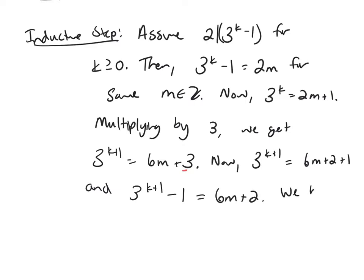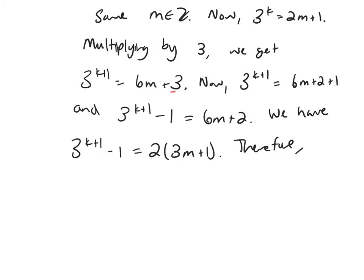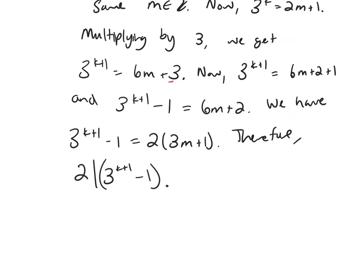So we have that 3 to the k plus 1 minus 1 equals 2 times (3m plus 1). Therefore, 2 divides 3 to the k plus 1 minus 1. We've shown the statement is true for k plus 1, which completes the inductive step. This formula is therefore true for all values of n greater than or equal to 0.